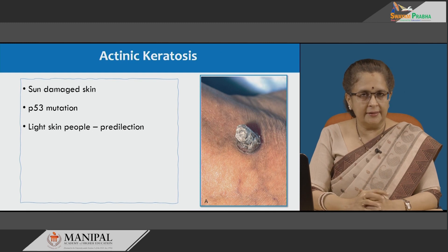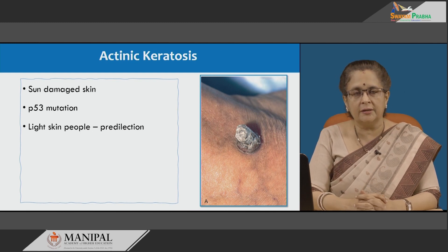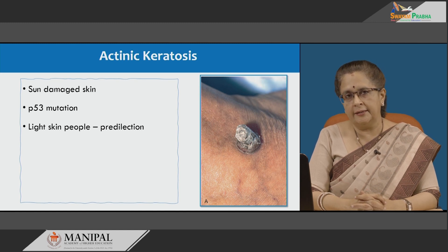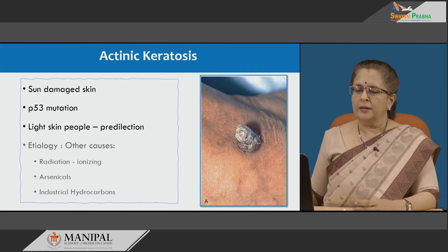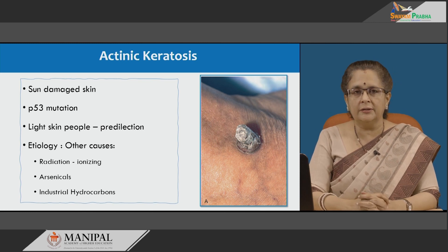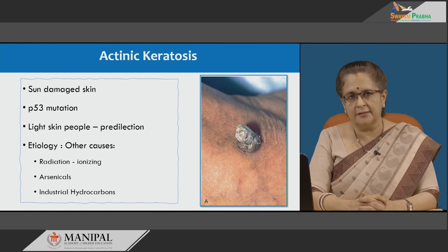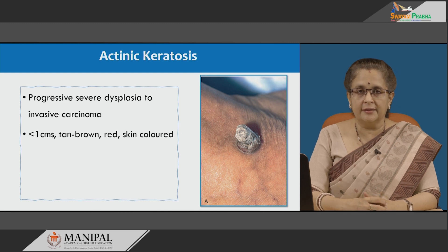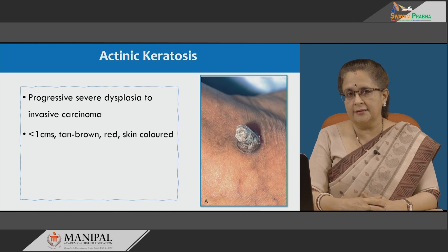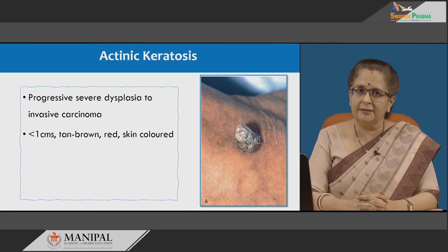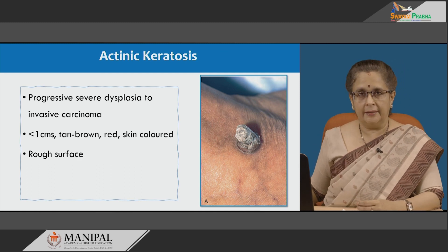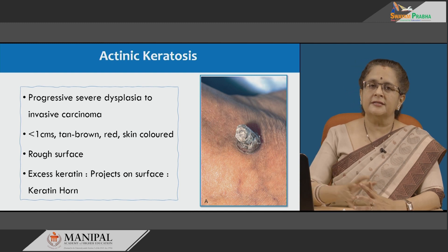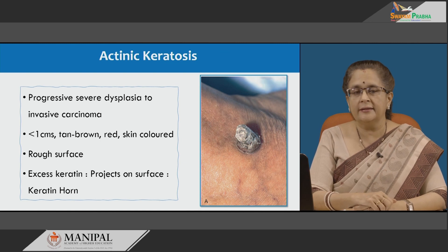Actinic keratosis presents in sun-damaged skin with a predilection for lightly pigmented individuals. The initial genetic abnormality noted is a p53 mutation. Other factors responsible include ionizing radiation exposure, as well as exposure to arsenicals and industrial hydrocarbons. It is usually less than 1 centimeter in diameter, tan-brown to red colored, and sometimes skin-colored. The surface is rough like sandpaper, but excessive keratin can accumulate on the surface forming an elevation similar to a horn, known as a keratin horn.